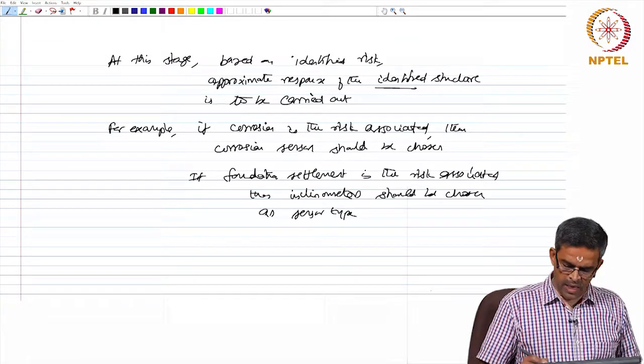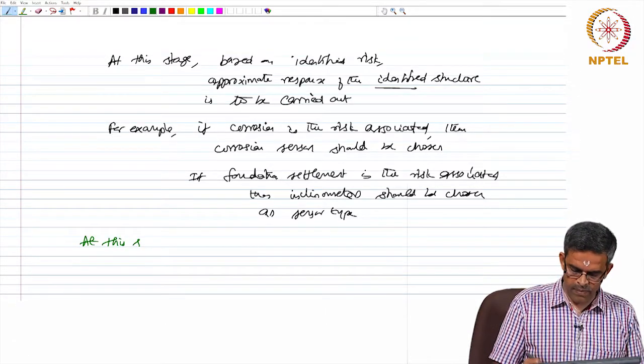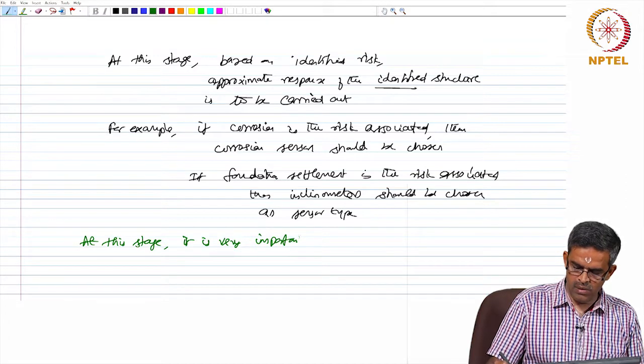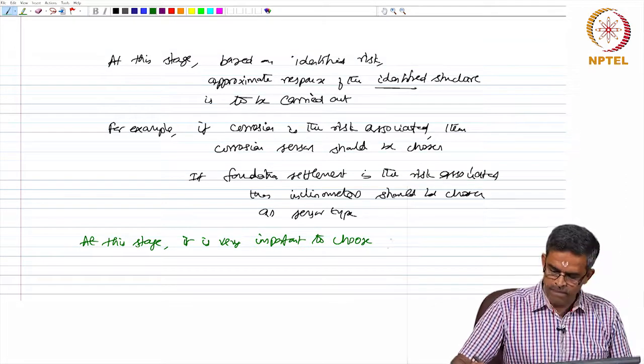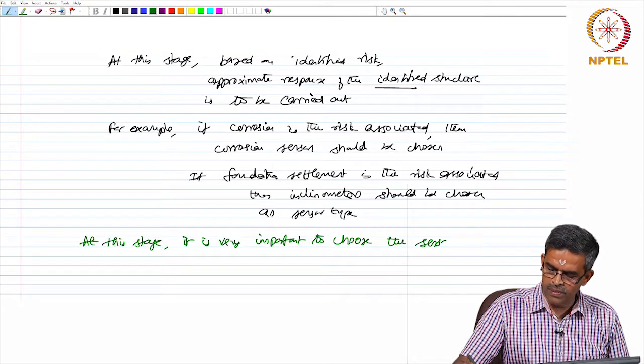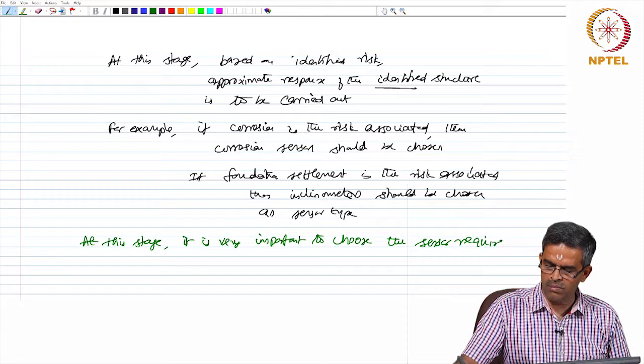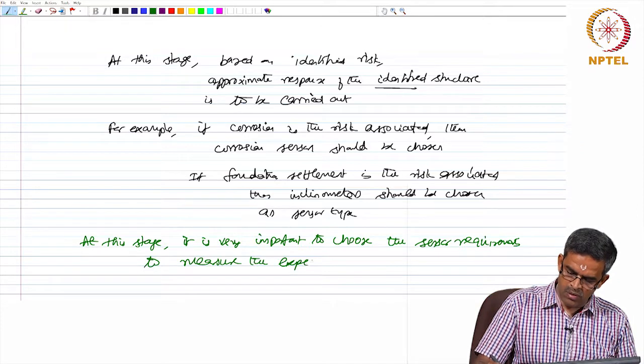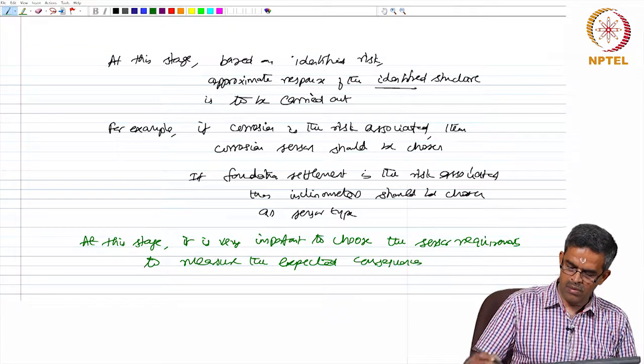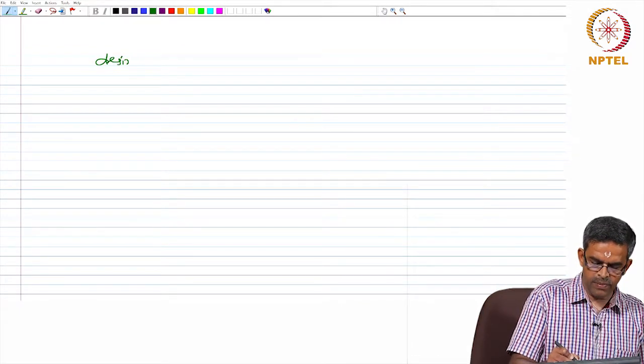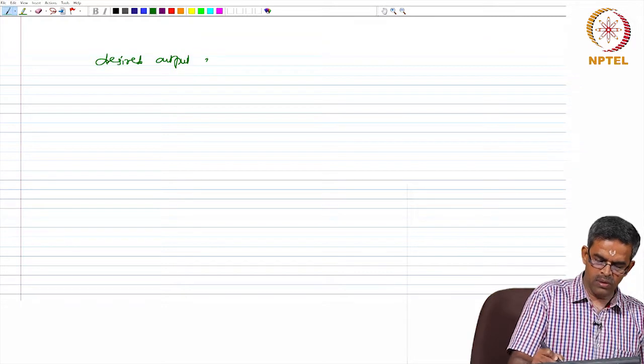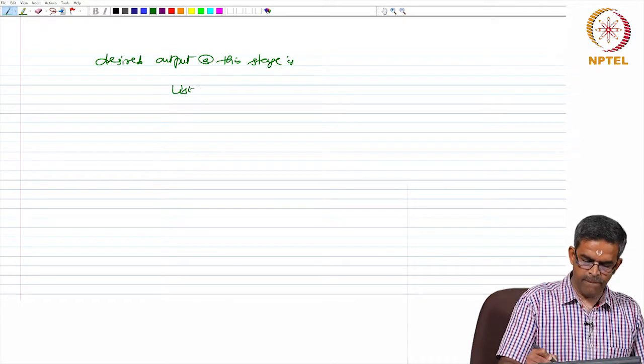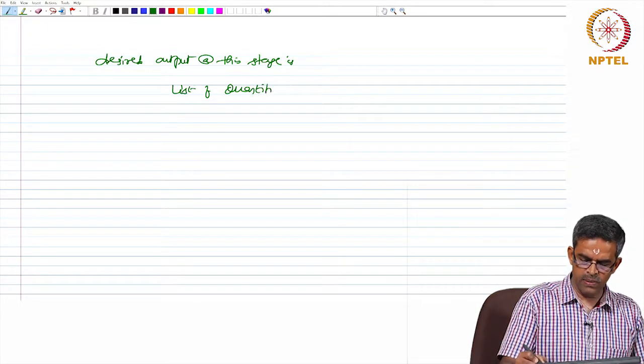So, friends, at this stage it is very important to choose the sensor type. I should say sensor requirements to measure the expected consequences. The desired output of this stage is a list of quantities that need to be measured.